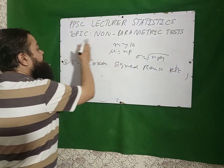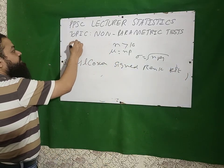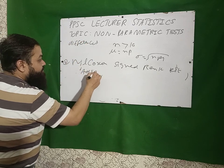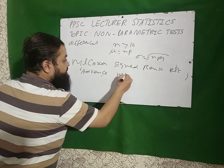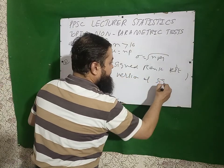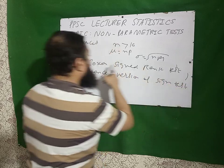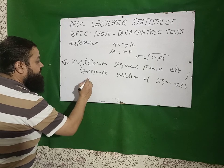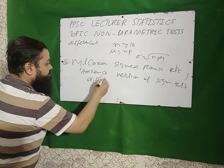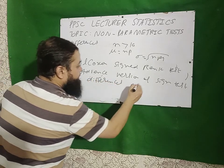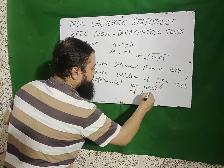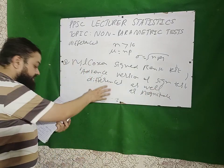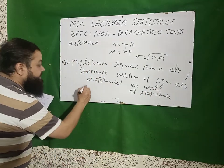In the sign test, we just take the differences. The Wilcoxon Signed Rank Test is the advanced version of the sign test — an important question. In the Wilcoxon Signed Rank Test, we take two things: differences as well as magnitude. It was discovered by Frank Wilcoxon in 1945.